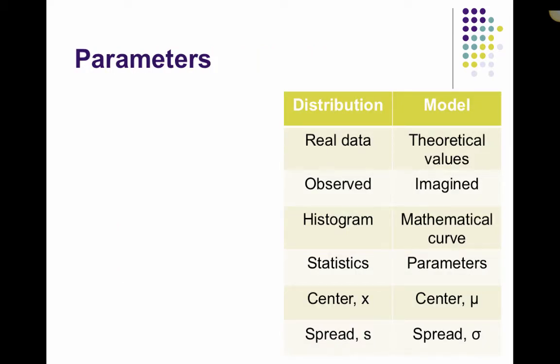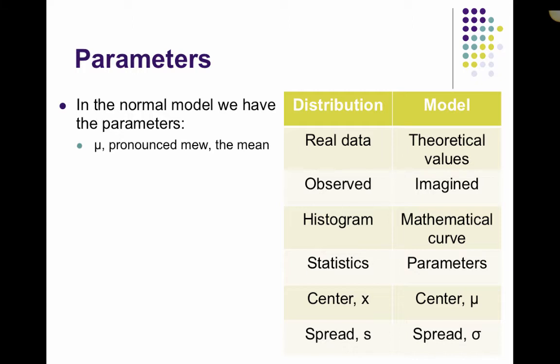So let's talk about parameters. In the normal model, we have parameters. The parameters are mu, that's a Greek letter, it's pronounced mu, it's the mean, and we have sigma, that is a lowercase sigma, again a Greek letter, and that's our standard deviation.